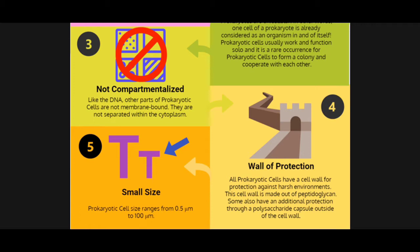Lastly, the fifth characteristic of a prokaryotic cell is its small size. Prokaryotic cells range from 0.5 micrometers to 100 micrometers, which is small compared to a eukaryotic cell. So next: what are eukaryotic cells exactly?